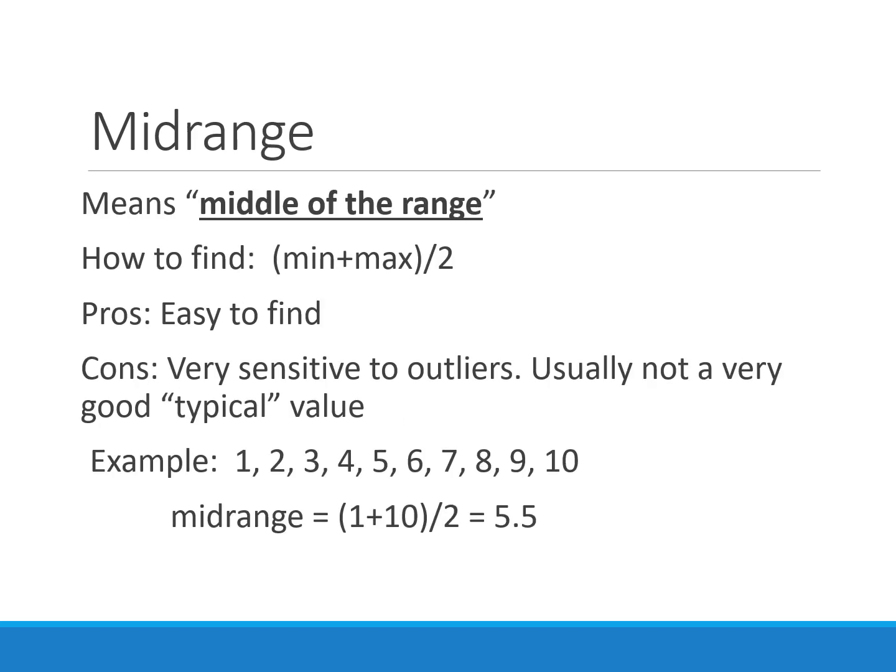Lastly, we have the midrange, which literally means the middle of the range. This isn't really an effective or widely used measure of center, but it's good to know what it is. We take the minimum, add the maximum, and divide by two. It's very easy to find; however, it's really sensitive to outliers because outliers will be either the minimum or maximum value, making it usually not a very good typical value.